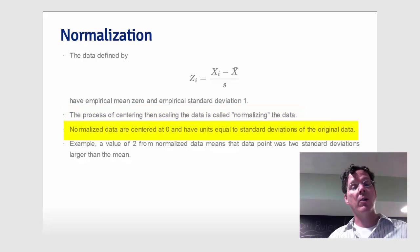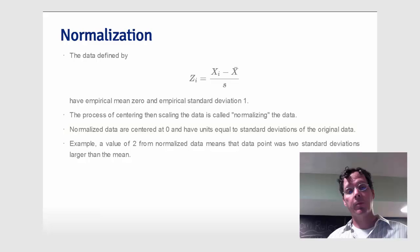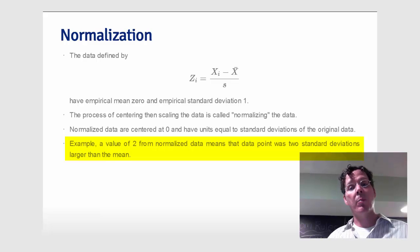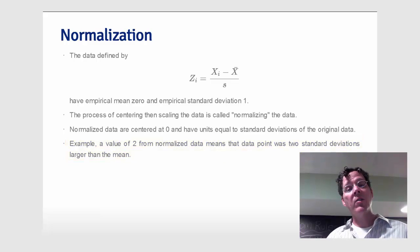So normalized data are centered at zero and have units equal to standard deviations away from the mean. So as an example, if something has a value of 2 from normalized data, that means that the data point was two standard deviations larger than the mean. As its name would suggest, normalization is an attempt to make otherwise non-comparable data sets comparable.